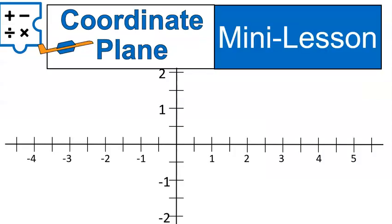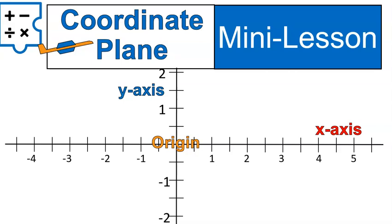A coordinate plane is not an airplane — just a little joke. There are a couple of things that you need to know. One is the origin, which is where the two lines cross right in the middle. This upright line is called the y-axis, and this horizontal line is called the x-axis. These are the three major components of the coordinate plane: x-axis (horizontal), y-axis (vertical), and the origin where those two lines cross at a perpendicular angle.